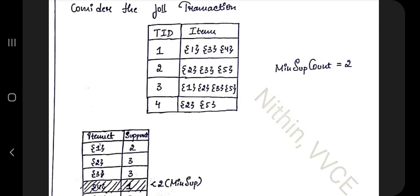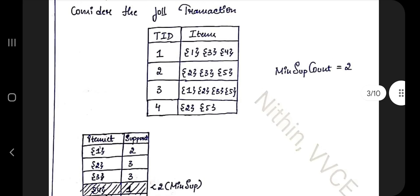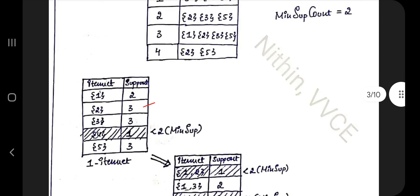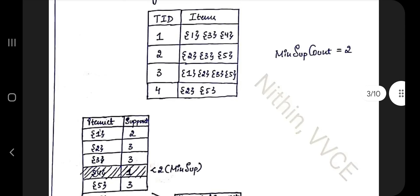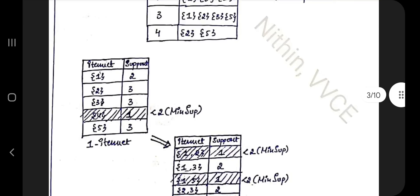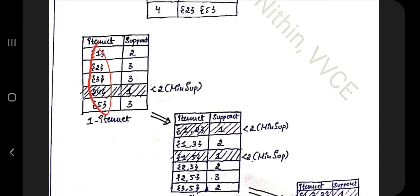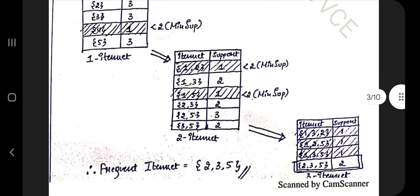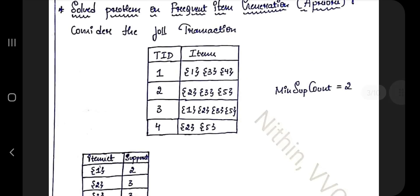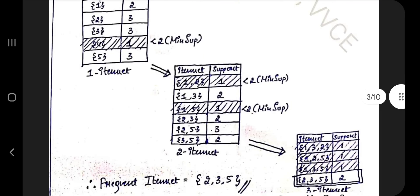First step: count how many unique items there are — 1, 2, 3, 4, 5 — and count how many times each appears. For example, item 1 appears twice, item 2 appears three times, and so on. Remove any item whose count is less than the minimum support. Then combine the remaining items into pairs — {1,2}, {1,3}, {1,5}, {2,3}, {2,5}, {3,5} — count how many times each pair appears together, and again remove pairs below the minimum support.